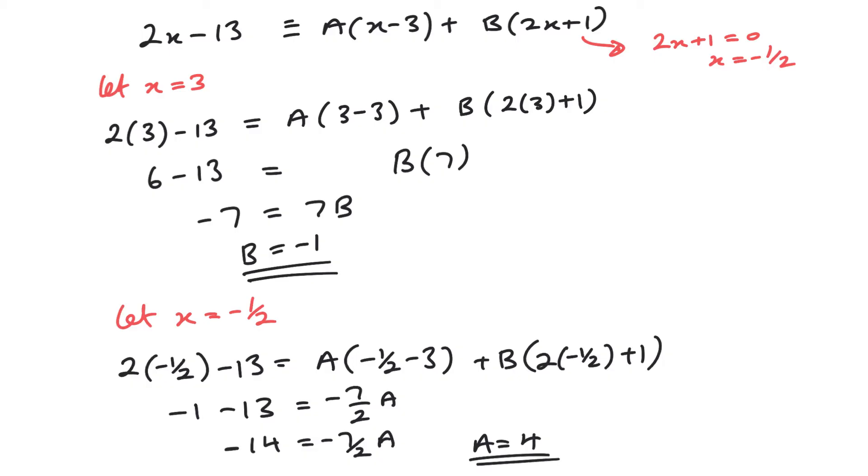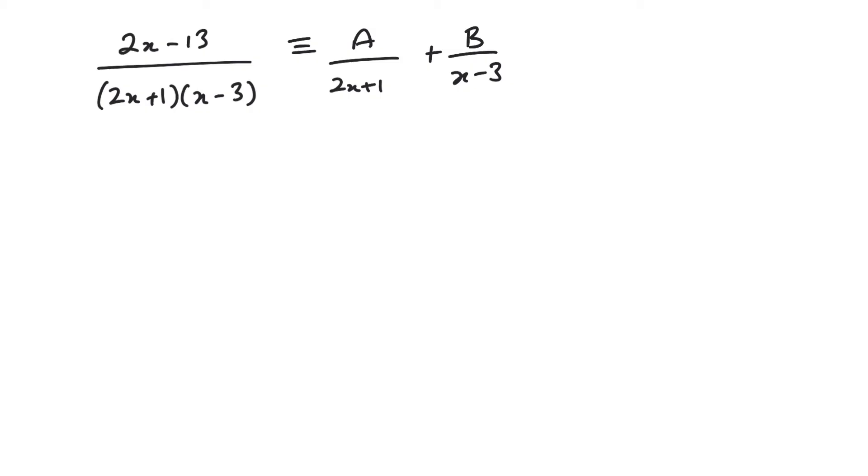So now I've got my values of A and B. We wrote down that our fraction was equivalent to A over this and B over this. A was 4 and B was negative 1. So when I split this fraction up, it's the same as 4 over 2x plus 1 minus 1 over x minus 3. So these are equivalent. And later on in P4, if we come to integrate something like this, it's not so easy, but as a partial fraction, this is dead easy to integrate. And that's one of its biggest uses.